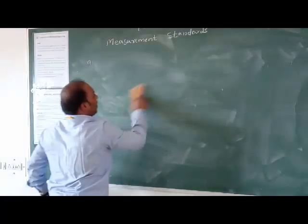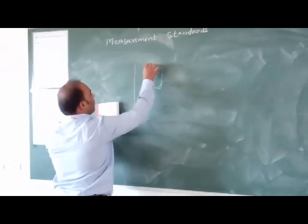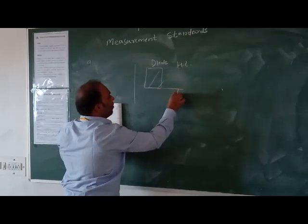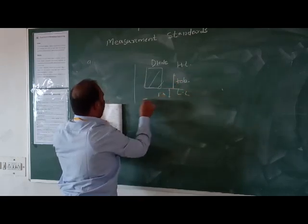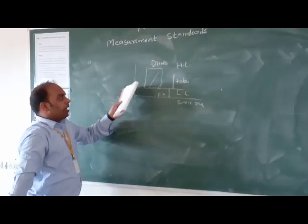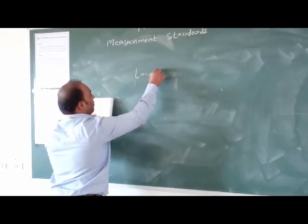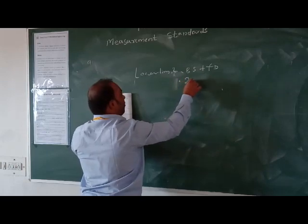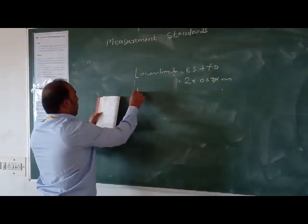In the diagram, we have the high limit, low limit, tolerance IT8, and fundamental deviation connected with basic size. Lower limit can be calculated as basic size plus fundamental deviation, giving 25.06386mm. Upper limit of the hole is 25.0965mm.